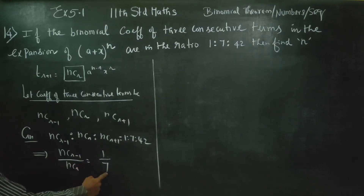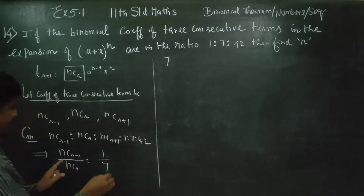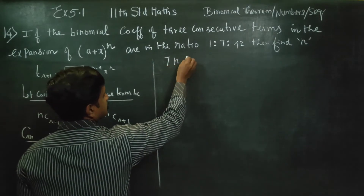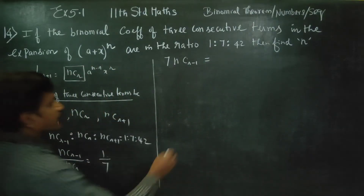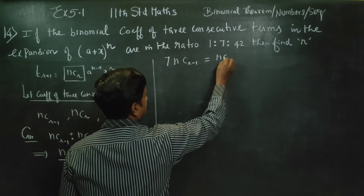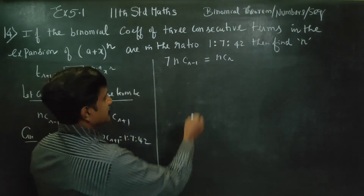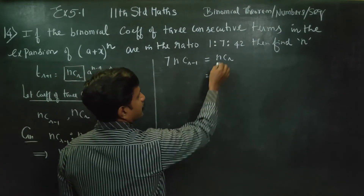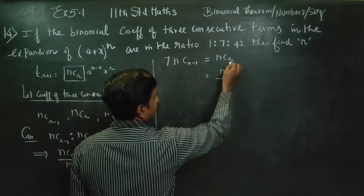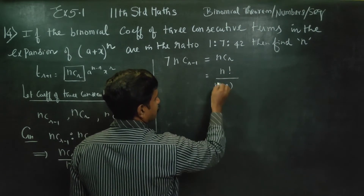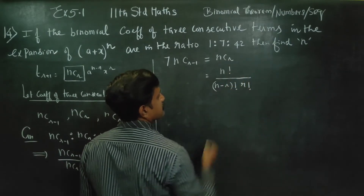Now we open the NCR formula. The formula for nCr is: n factorial divided by (n minus r) factorial into r factorial.